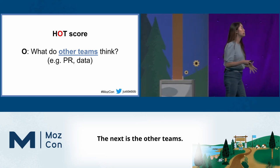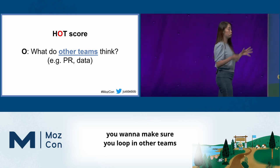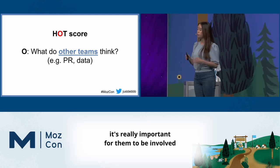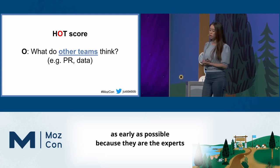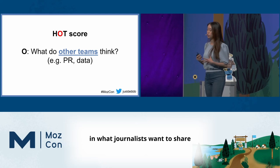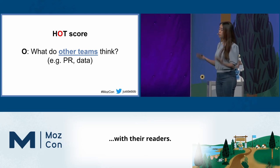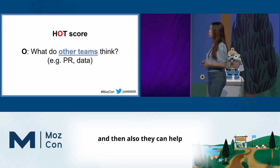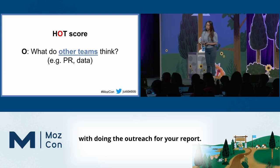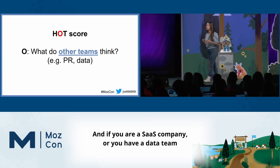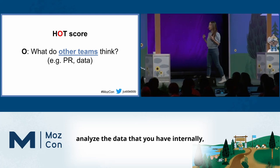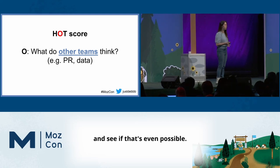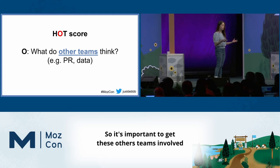The next is the Other teams. When you work on a research report, you want to make sure you loop in other teams like your PR team and your data team. For the PR team, it's really important for them to be involved as early as possible, because they are the experts in what journalists want to share with their readers. So you can get their feedback on your ideas, and they can also help with doing the outreach for your report. If you are a SaaS company or you have a data team and you want to analyze data internally, you want to ask your data team if that's even possible.